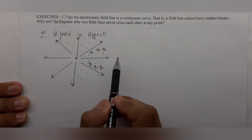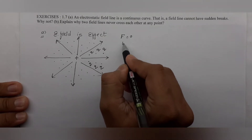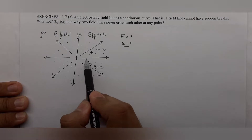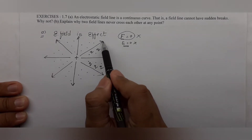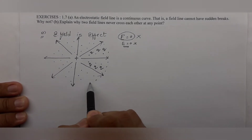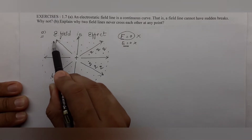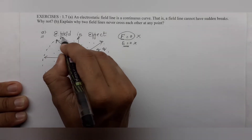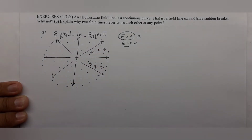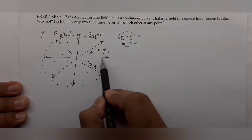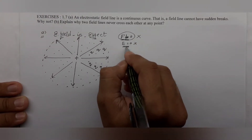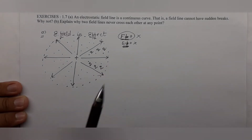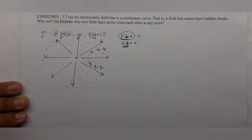अगर कोई ऐसा पॉइंट होगा जहां field की बात करें — इस circle के अंदर की बात करें तो आपको field continuous मिलेगा। Field भी 0 नहीं होगा। That's why the field lines cannot have sudden breaks — because the force on any charge never becomes 0 inside the field.